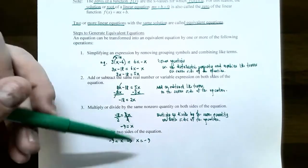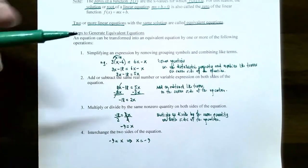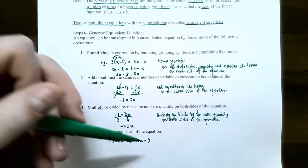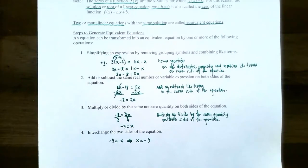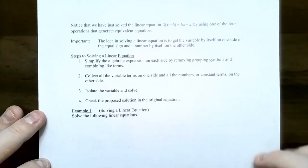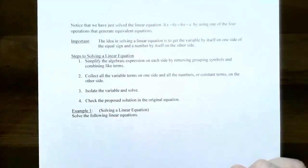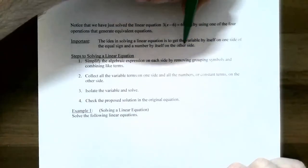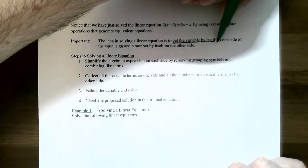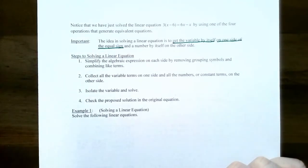X equals negative nine is the solution to the equation, meaning if x equals negative nine, it makes the equation a true statement. You can always check your answer — substitute negative nine back into every x in the original equation, and it will make it true. The goal is always to get the variable by itself on one side of the equation and a number by itself on the other side.